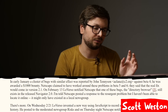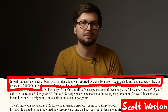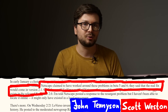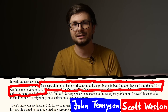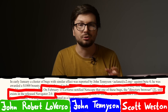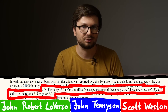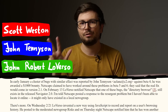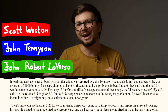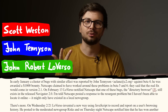Let's read another paragraph of TBTF. In early January, a cluster of bugs with similar effect was reported by John Tennyson against beta 4. He was awarded a thousand dollar bounty. Netscape claimed to have worked around these problems in beta 5 and 6, saying the real fix would come in version 2.1. On February 13, Loverso notified Netscape that one of these bugs — the directory browser — still existed in the released Navigator 2.0. So as you can see, these three people all reported serious JavaScript security bugs in the early months of 1996, and that's why I call them the legends of JavaScript security: Scott Weston, John Tennyson, and John Robert Loverso.